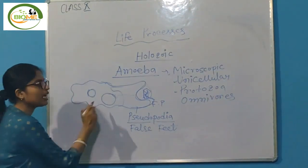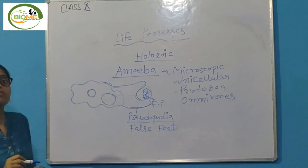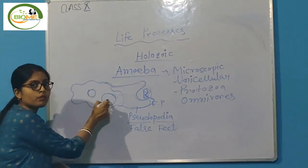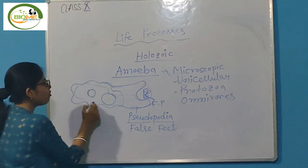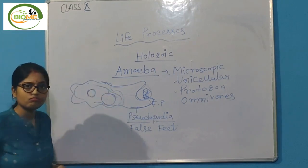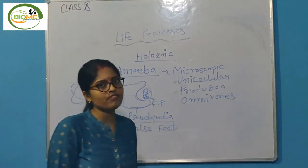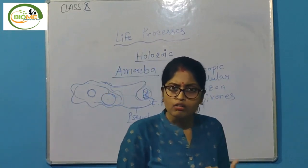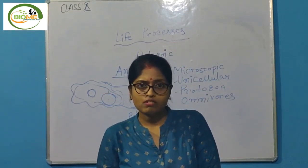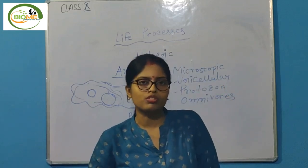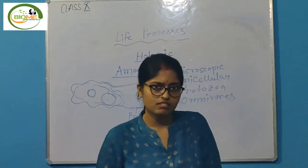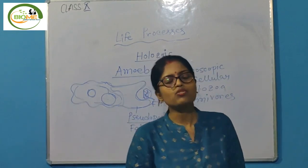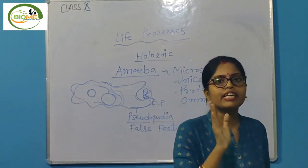Next is absorption — the simple absorbable form circulates throughout the cytoplasm for growth, development, and other functions. Then a small amount is stored for future use for the synthesis of essential parts of the amoeba's body — this is assimilation.